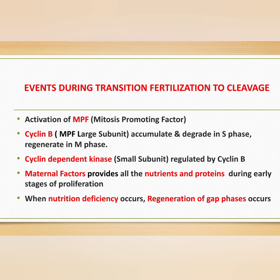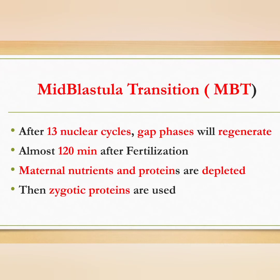During the initial stage of development, cleavage is controlled by maternal factors, which provide all the nutrients and proteins during the early stages of proliferation. Once the maternal nutrients are depleted, zygotic proteins begin to act. At this time, the gap phases are added back to the cell cycle, and this stage is called the mid-blastular transition.